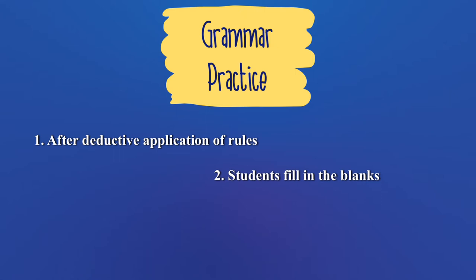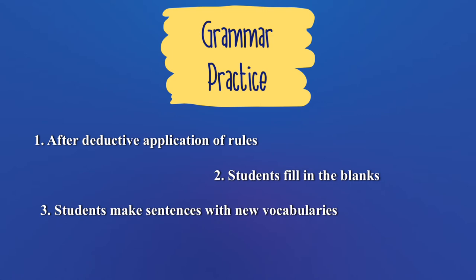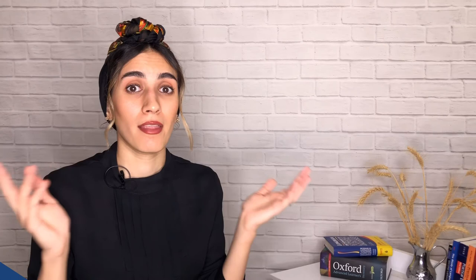After teaching grammar rules deductively — which students need to memorize — students are given a series of sentences with words missing and fill in the blanks with new vocabulary or a particular grammar type. They are given lists of vocabulary words with their native equivalents. In order to show understanding, students make sentences with new vocabulary. Finally, the teacher gives students a topic to write about, related to the reading passage of the lesson.